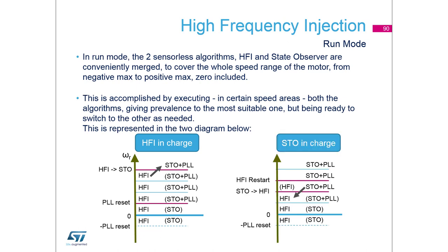Similarly, when we slow down again, after some threshold we reactivate HFI, and after another threshold we switch from state observer plus PLL to HFI. After yet another threshold we stop the PLL and save processing time, because it's not reliable to work with PLL at that speed. That's a simple hysteresis control of these two algorithms.